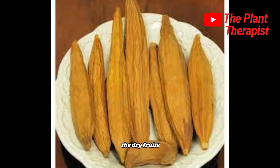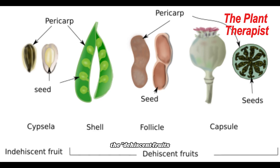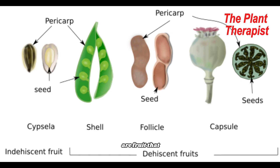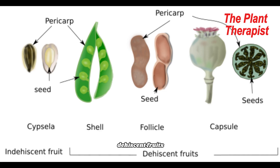The next is the dry fruit — a fruit whose mesocarp is usually dry at maturity. Under dry fruit we have two types: dehiscent fruit and indehiscent fruit. Dehiscent dry fruits are fruits that split at maturity, while indehiscent dry fruits are fruits that do not split at maturity. These fruits are mostly in the form of pods. Dehiscent fruits are also distinguished by the way in which they split.